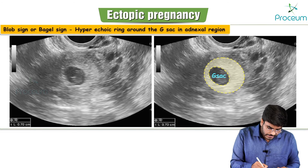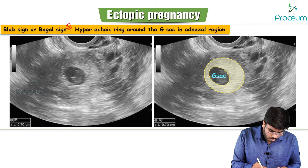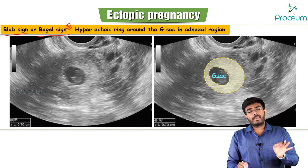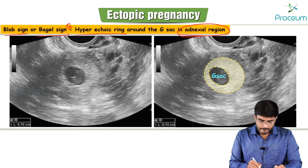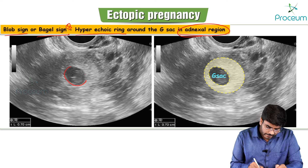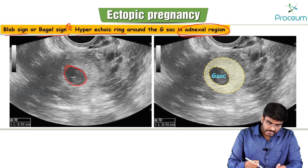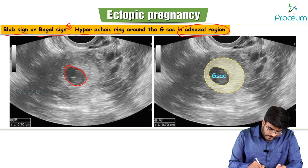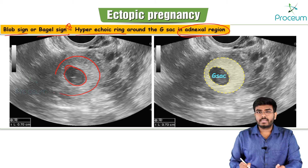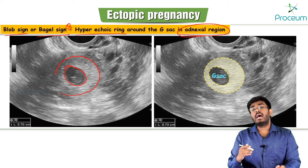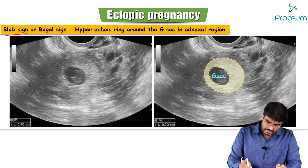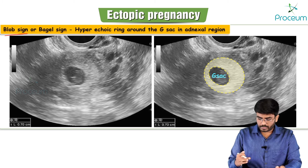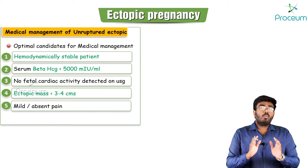The blob sign or bagel sign is seen in ectopic pregnancies. It refers to a gestational sac in the adnexal region surrounded by a hyperechoic ring. This adnexal gestational sac with a hyperechoic ring is called the blob sign or bagel sign and confirms ectopic pregnancy.